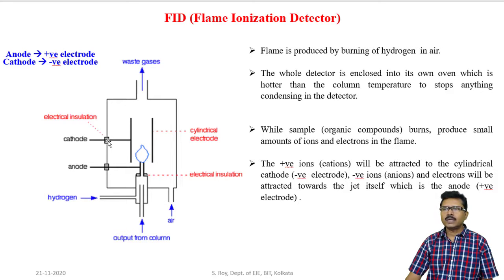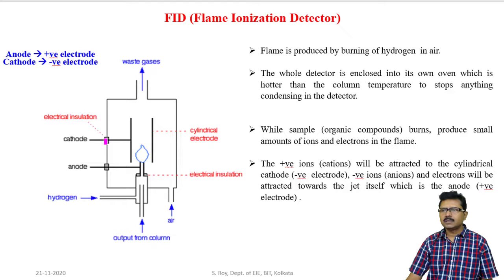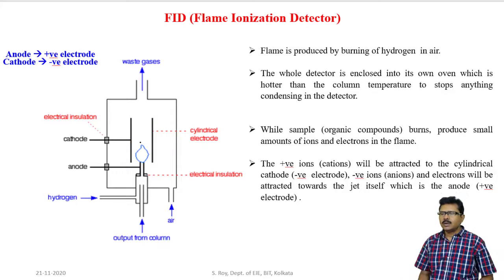In the detector there are two electrodes — one is cathode and another one is anode. The anode is the positive electrode and cathode is the negative electrode. In the external circuit, anode is connected with the positive terminal of the battery and the negative terminal is connected with the cathode. The cylindrical jet acts as the anode and the upper cylinder acts as a cathode. When sample enters through the jet and is burnt by the flame, that sample will form positive ions, negative ions, and electrons.